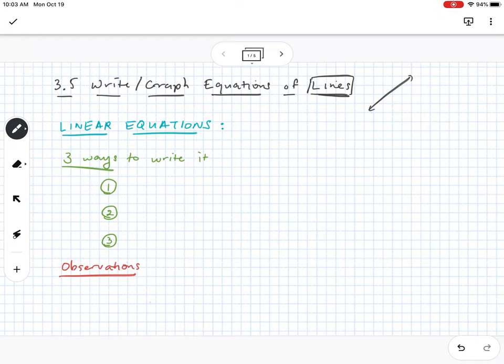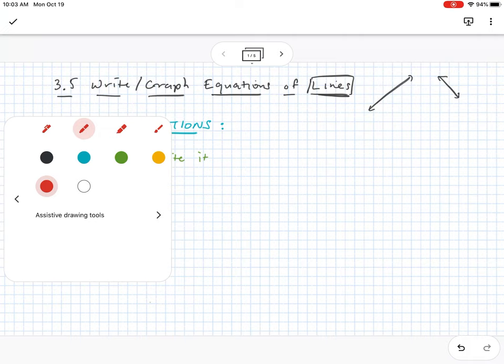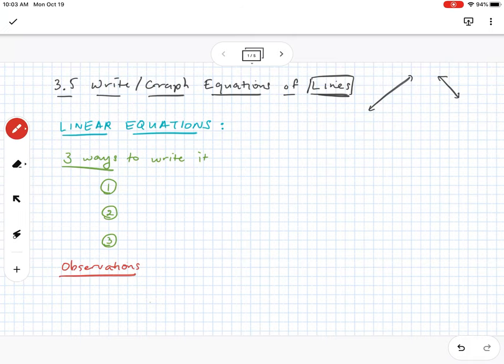We've learned plenty about lines up to this point, but just by way of review, a line goes on in two directions forever. And a line also has a constant slope.